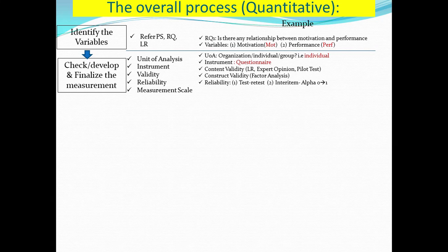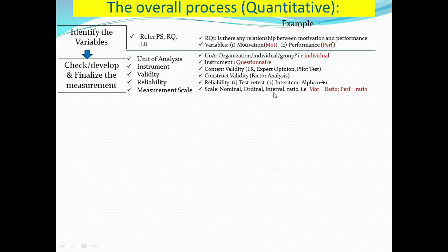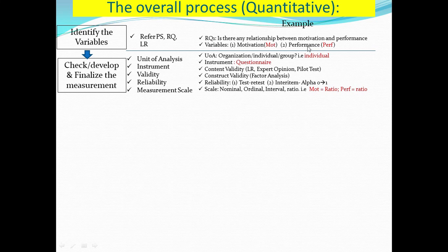Those are the things we should do at this stage. Next, we have to be very sure what scale we use in our questions — whether it is nominal, ordinal, interval, or ratio. The reason we must confirm the category of scale is that towards the end we will run the analysis, and the analysis will depend heavily on the type of scale. In our case, motivation is a ratio scale because we are using Likert scale, and performance also falls under ratio scale because we are using Likert scale 1, 2, 3, 4, 5. So these are the components of the second step.